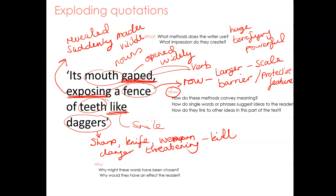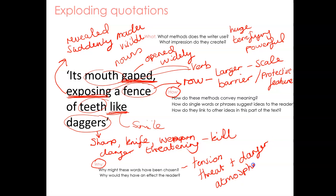You can see here how my annotations are just helping to shape my thinking before I then go on to write about the text. So I need to look finally at the Why. Why do I think these words have been chosen? Why will they have an effect on the reader? Ultimately, I think this has a lot to do with establishing tension — it seems to be a moment of danger, of threat definitely to the characters in the text. So the idea of increasing tension through the emphasis on threat and danger, and certainly thinking about the atmosphere and the characters in the text too.